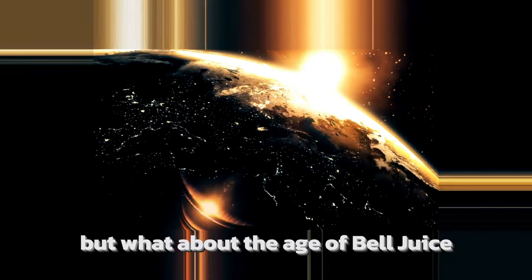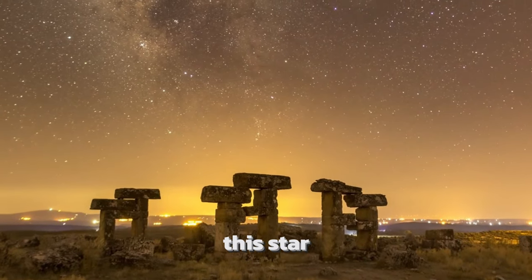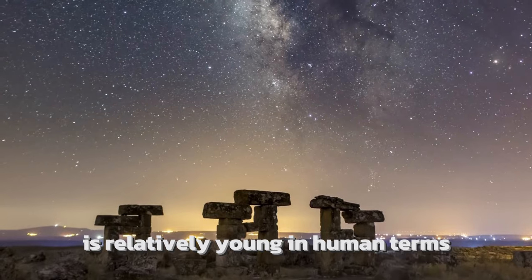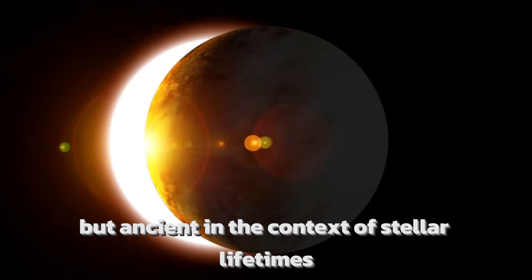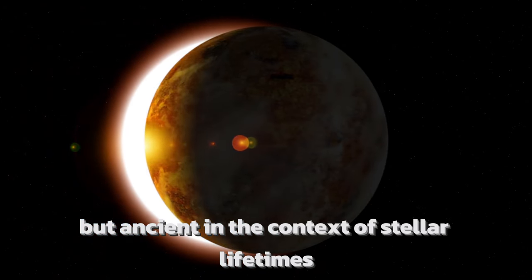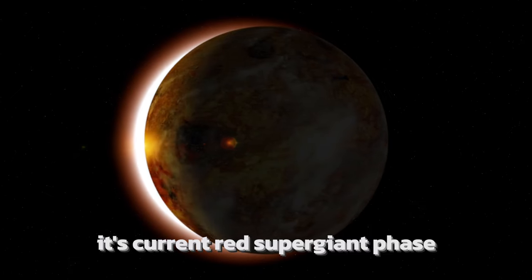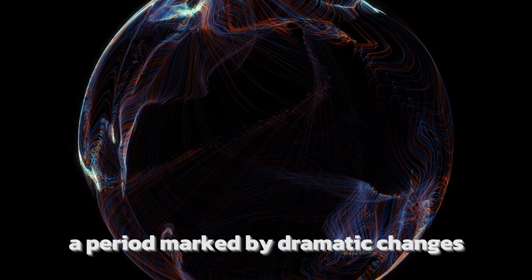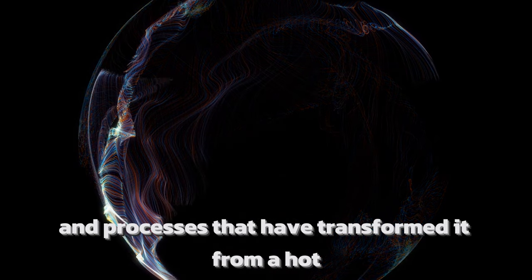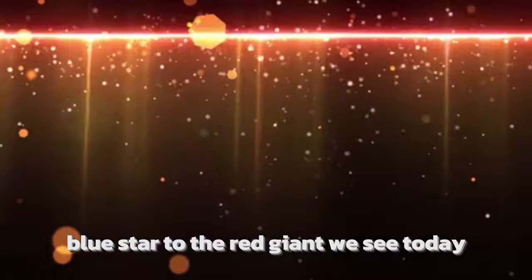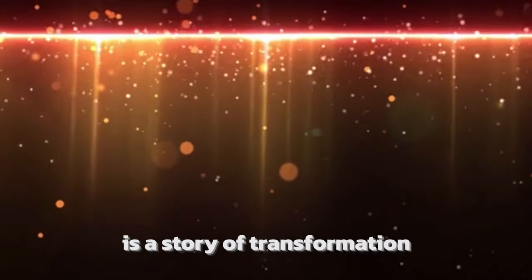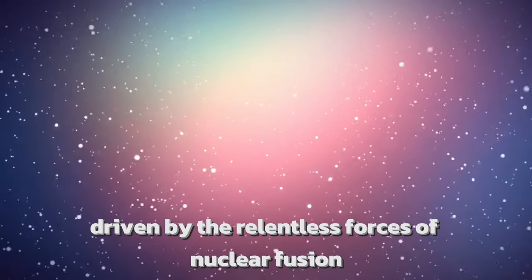But what about the age of Betelgeuse? This star, believed to be around 8 to 8.5 million years old, is relatively young in human terms but ancient in the context of stellar lifetimes. Its current red supergiant phase is the culmination of millions of years of stellar evolution, a period marked by dramatic changes and processes that have transformed it from a hot blue star to the red giant we see today. The life cycle of stars like Betelgeuse is a story of transformation driven by the relentless forces of nuclear fusion and gravity.